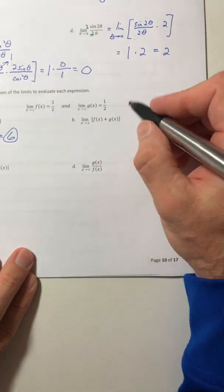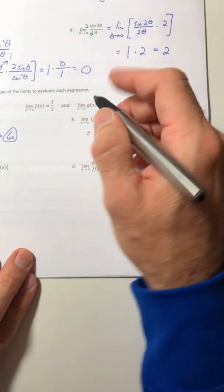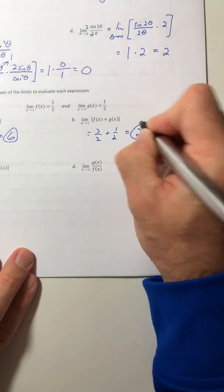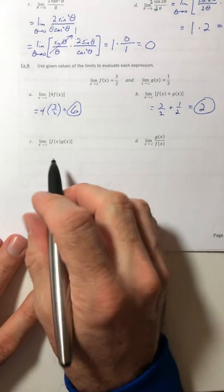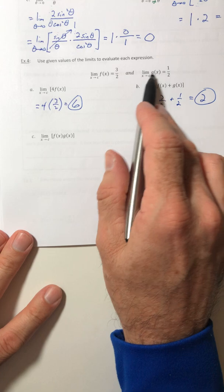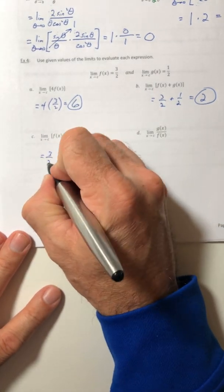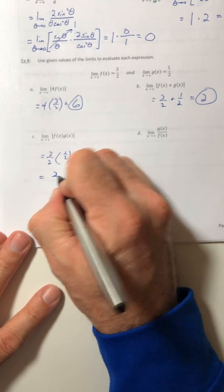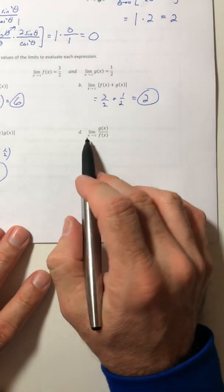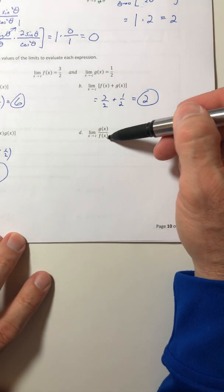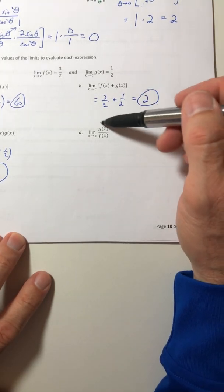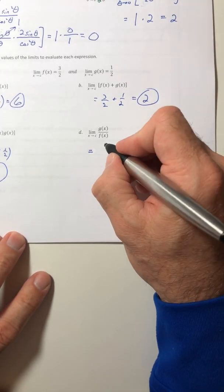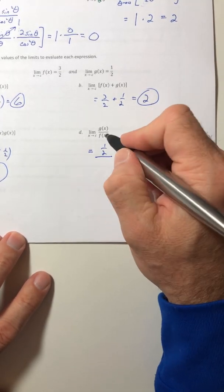For B, it's the limit of F plus G. So take their limit values and add them up, and you end up with two. For C, you got to multiply them, so three over four. For D, now you're dividing. Just make sure you divide it in the same order. So in this case, the G limit's on top and the F limit is underneath.